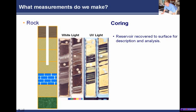Under ultraviolet light, oil and hydrocarbons tend to fluoresce and glow in quite a nice, pretty golden colour — that's what pays the bill. This is oil-filled sandstone and that's why it's glowing here. These shales, these mud rocks which don't contain any oil, appear quite dark.